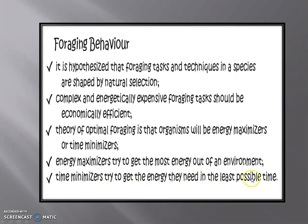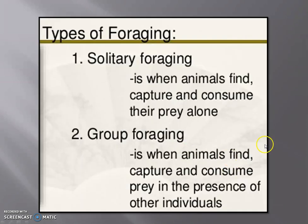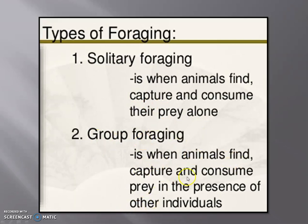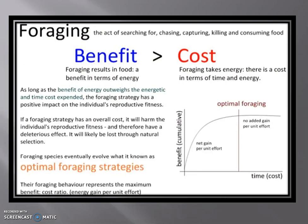The types of foraging are solitary foraging and group foraging. Solitary foraging is when an animal finds, captures, and consumes its prey alone with no group. Group foraging is when an animal finds, captures, and consumes prey in the presence of other individuals.